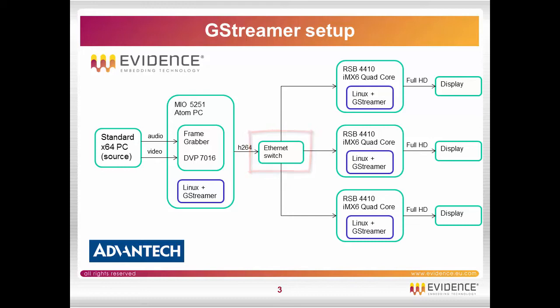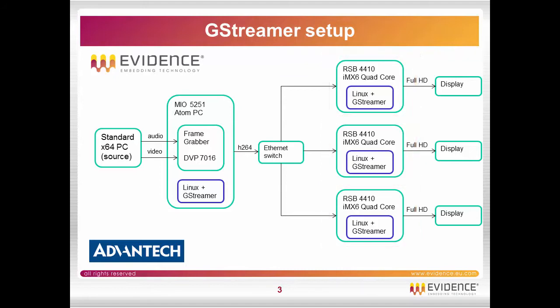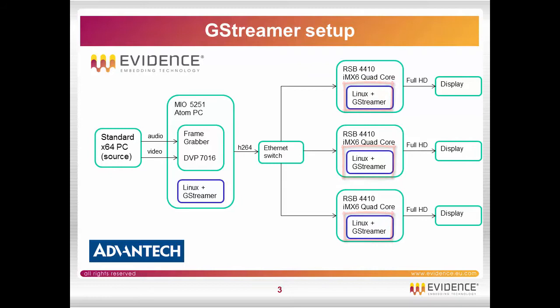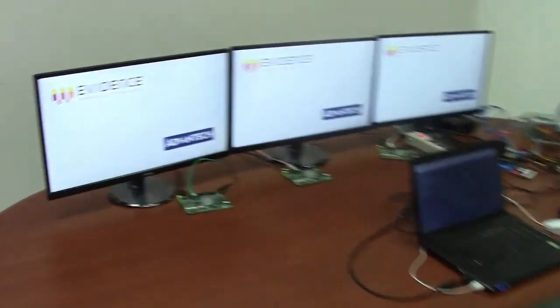Then there is an Ethernet switch, and attached to the Ethernet switch there are a set of IMXX quad core machines which are RSB4410 machines from Advantech. These are running Linux and G-Streamer, and they are used to fully decode in full HD the audio-video stream, which is then shown on a display.